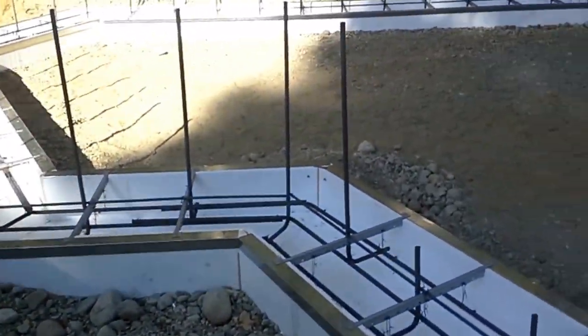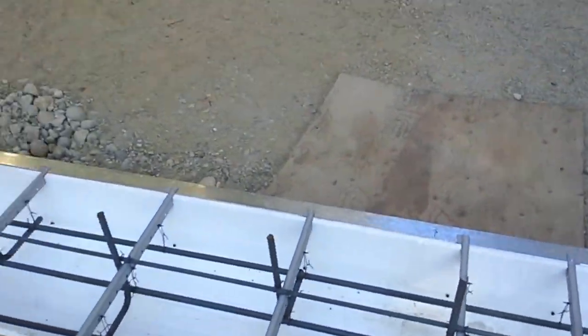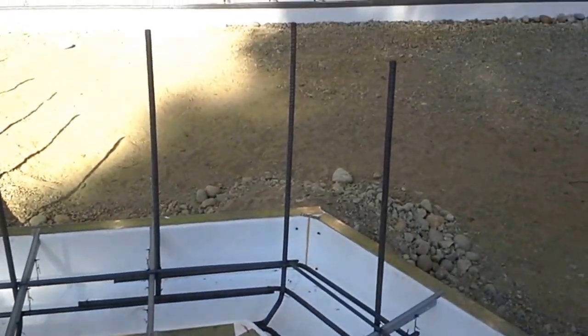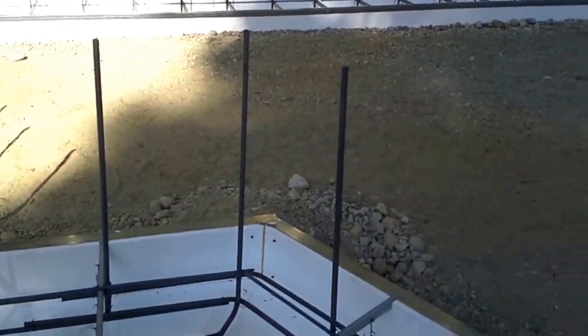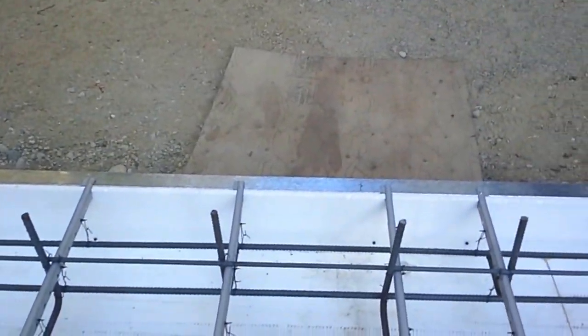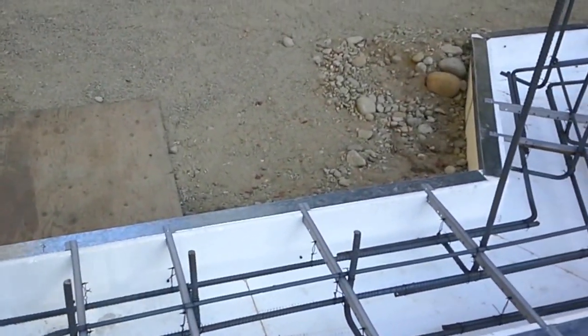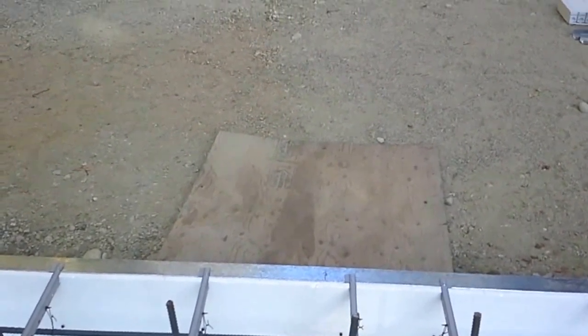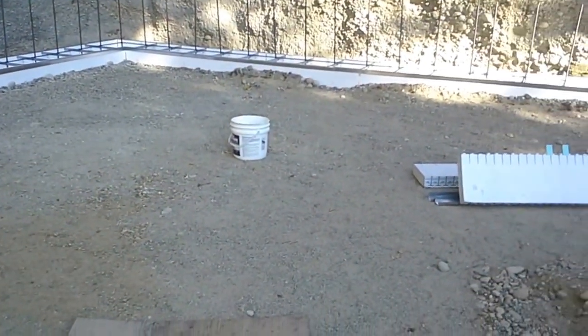And so here we have it. The longer rebars are where the walls are going to be, and these shorter ones are where the door is going to be. We have a six foot, three and three door going in out of the space here.